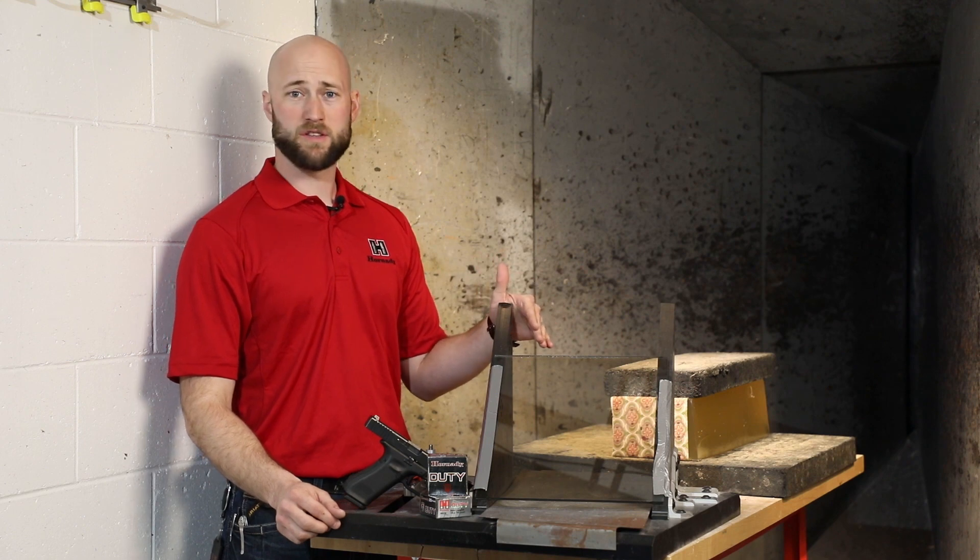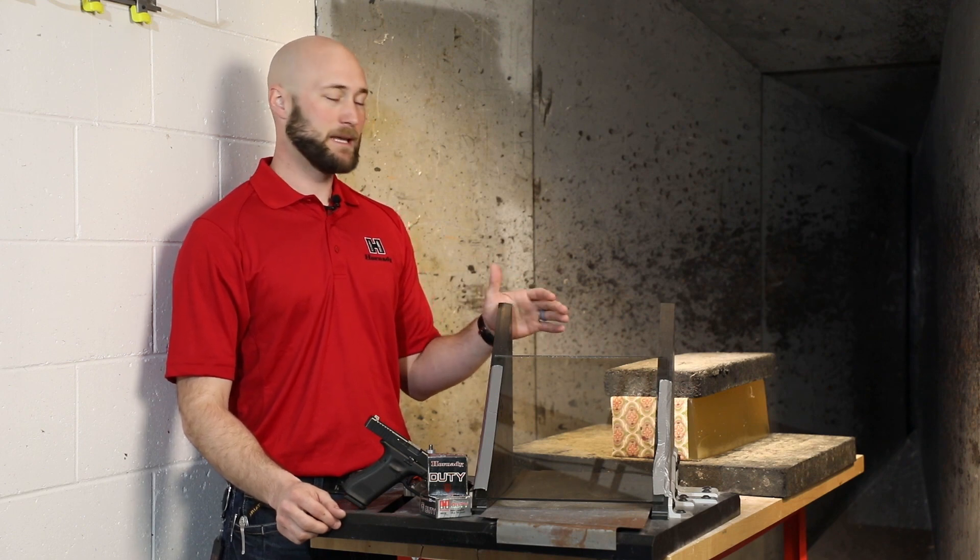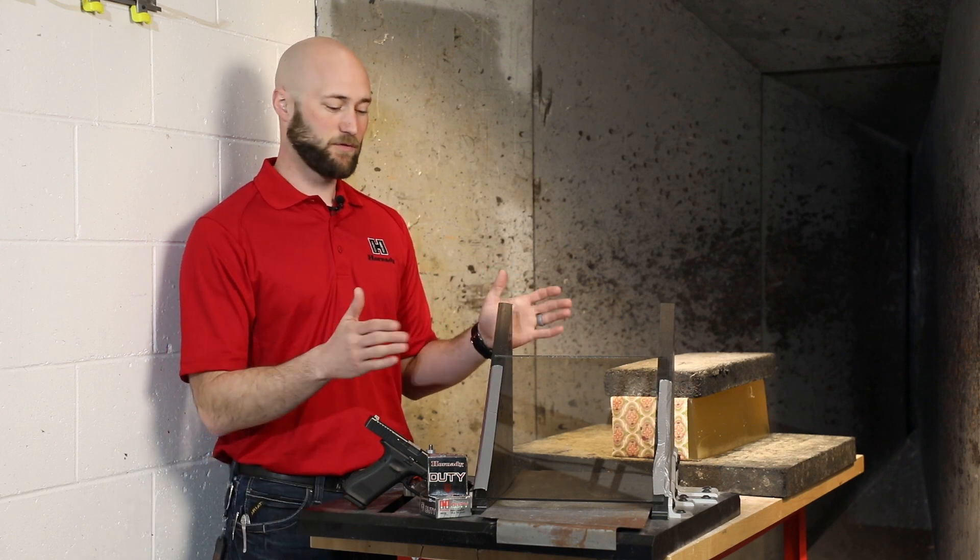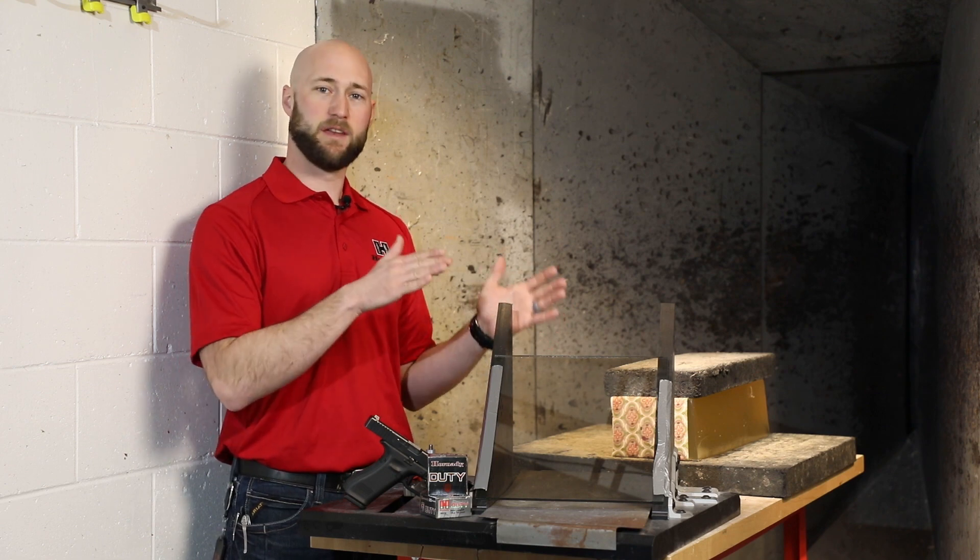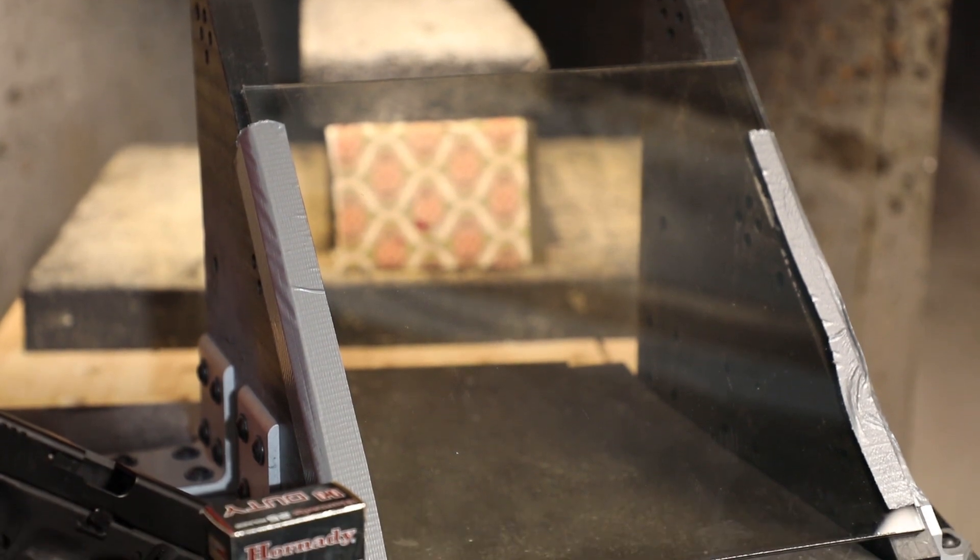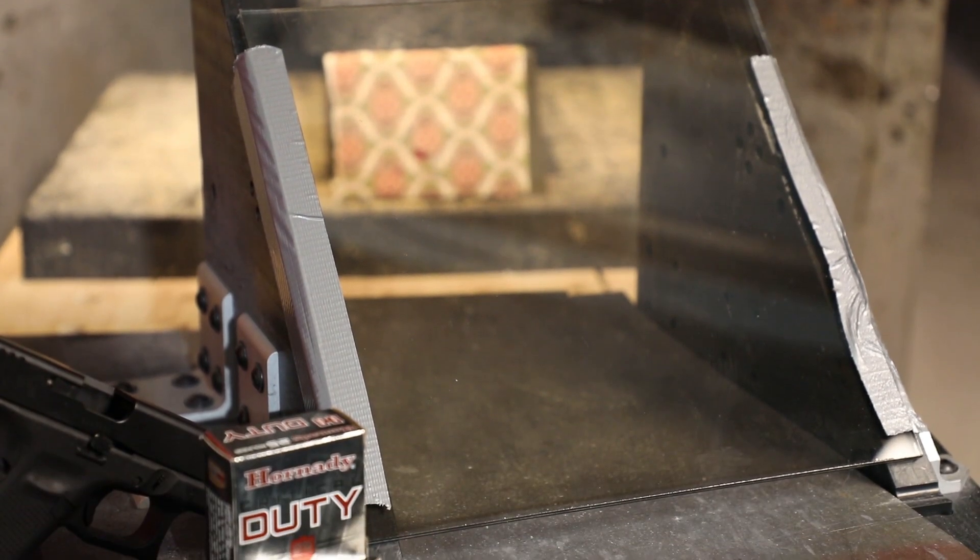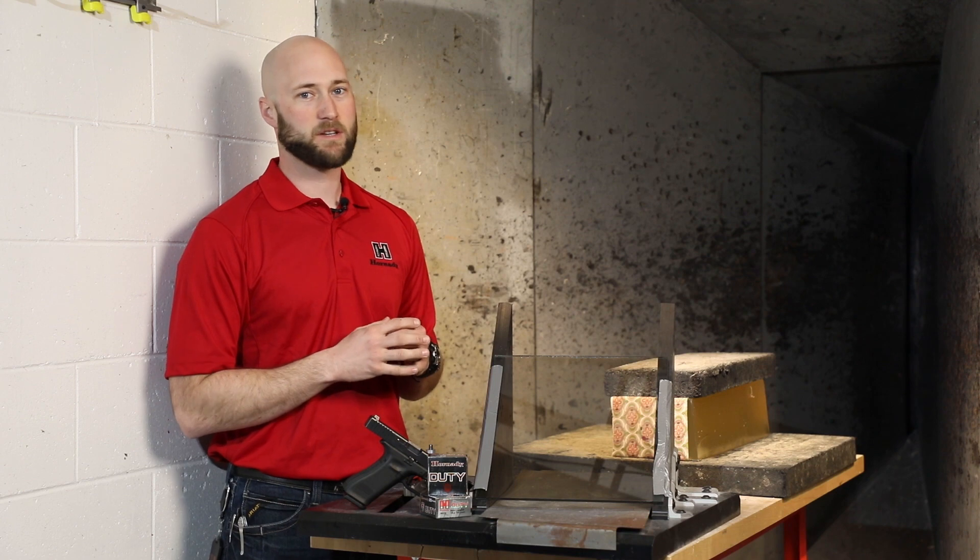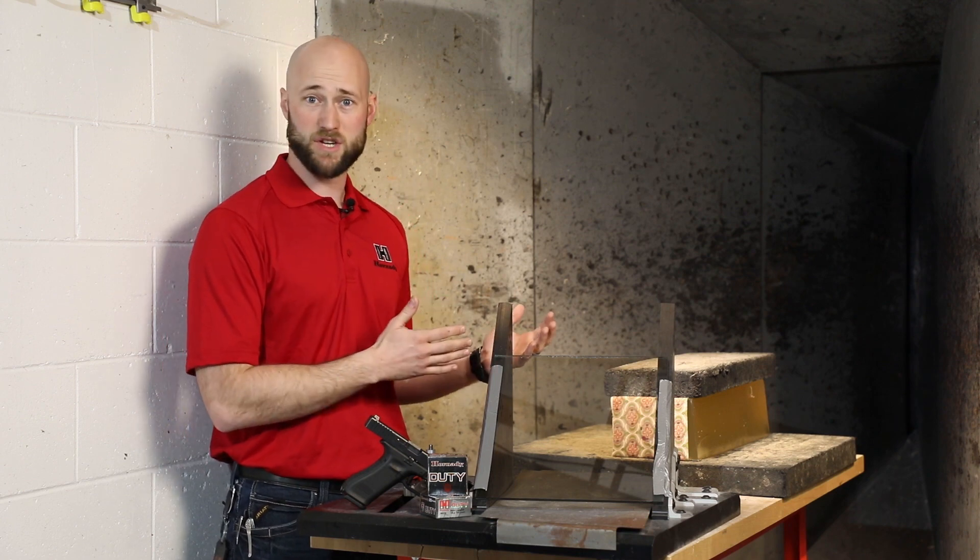Now this is standard quarter inch thick safety glass. It is set at a compound angle so it's 45 degrees from the shooter and then 15 degrees laid horizontal. This is to simulate the driver's side of a vehicle as you look at it from the front. Traditionally a very tough barrier for bullets to get penetration into the gel.